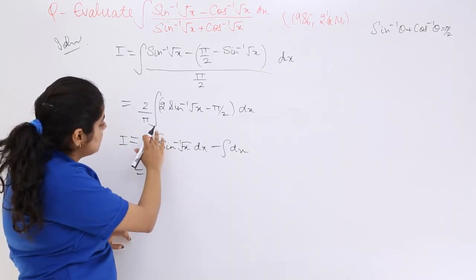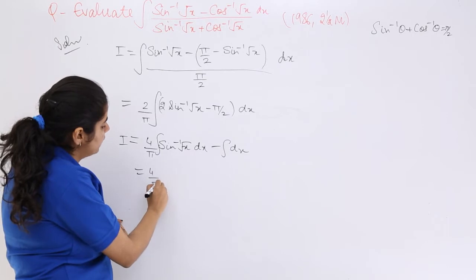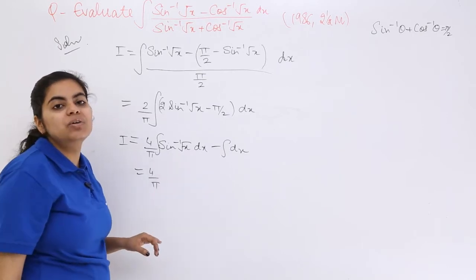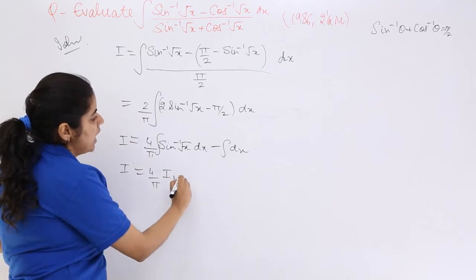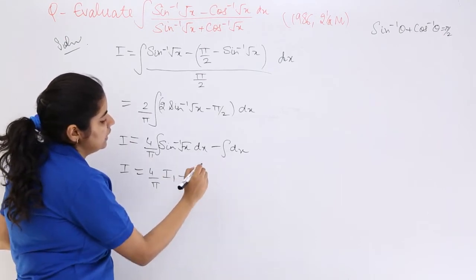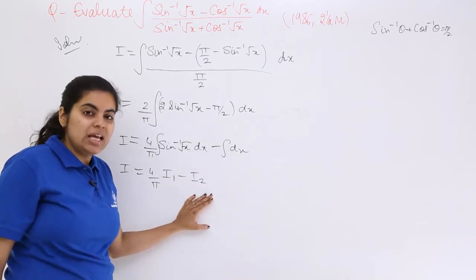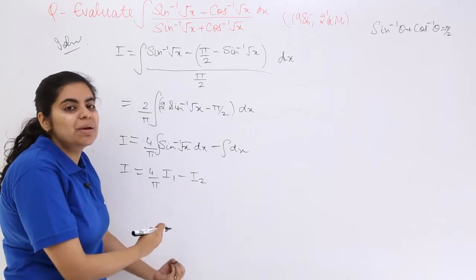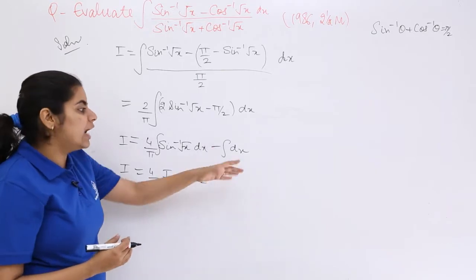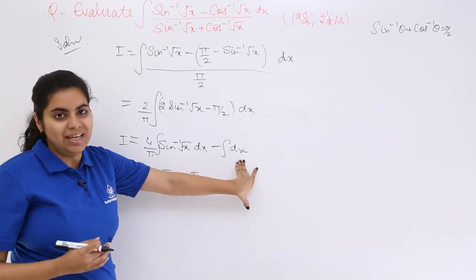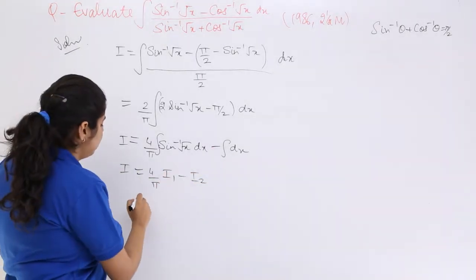Now as you can see, this is 4 over π, and here it is sin inverse root x. I can write it as I1. And here, minus integration of dx can be written as I2. Now separately we will find out the integrals I1 and I2. Anyways, you know I2 would come out to be x.